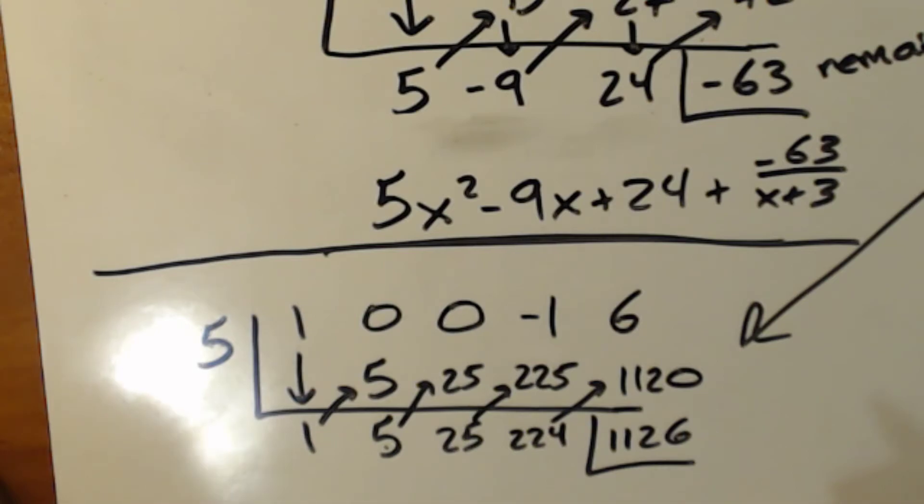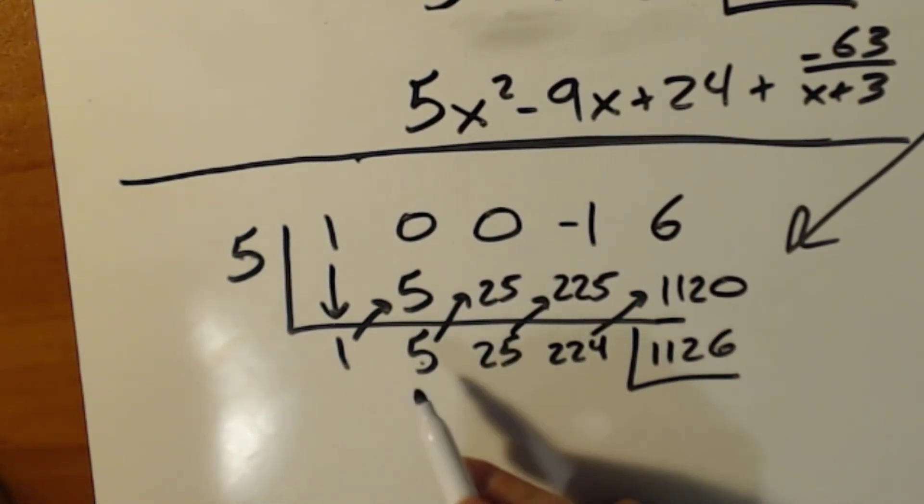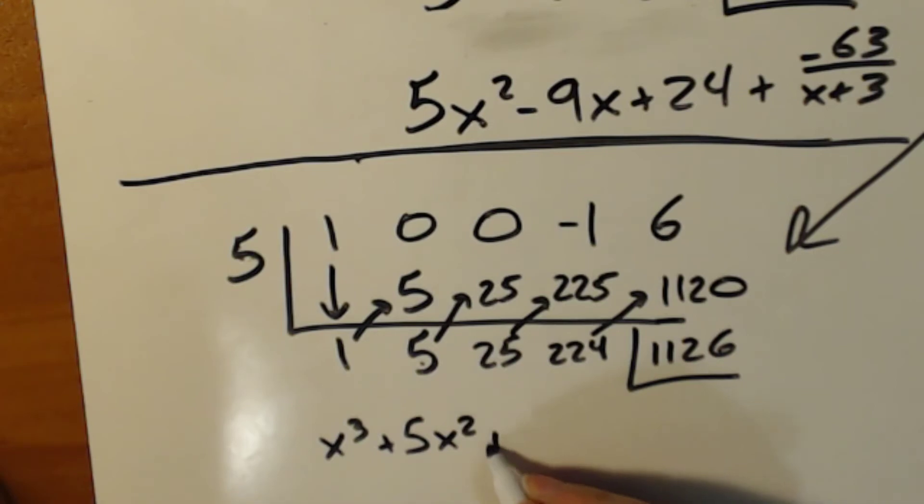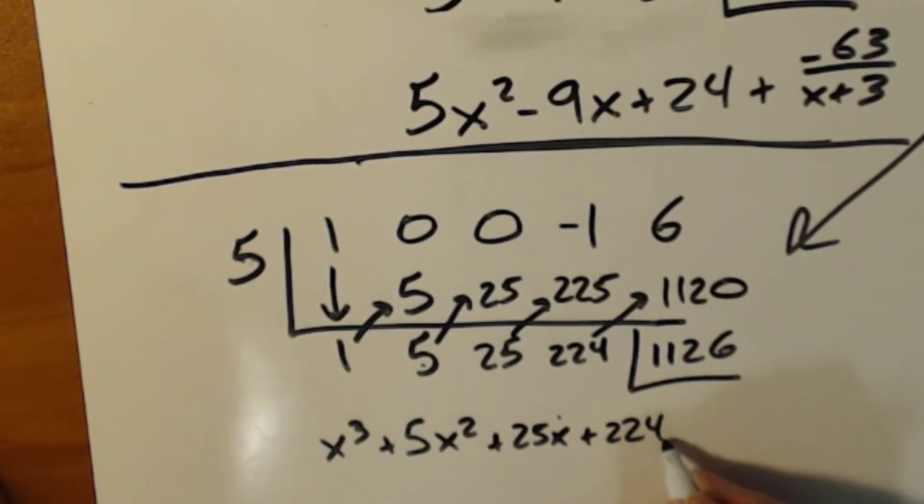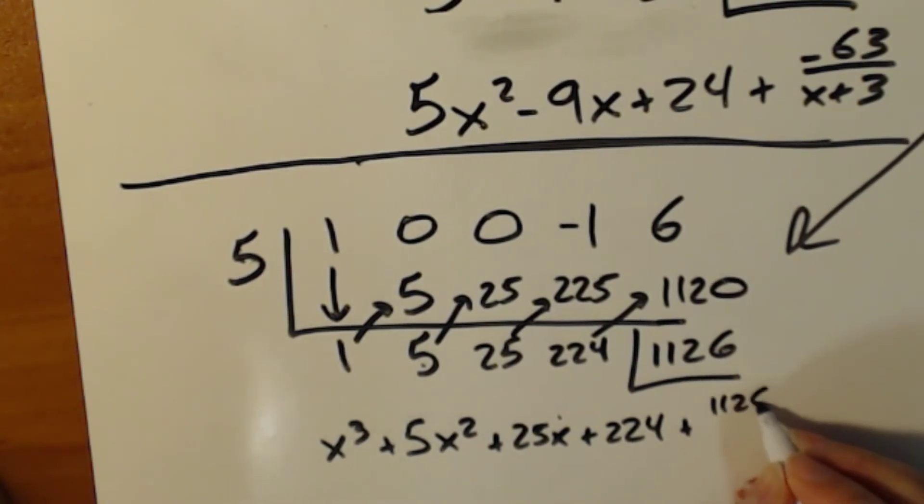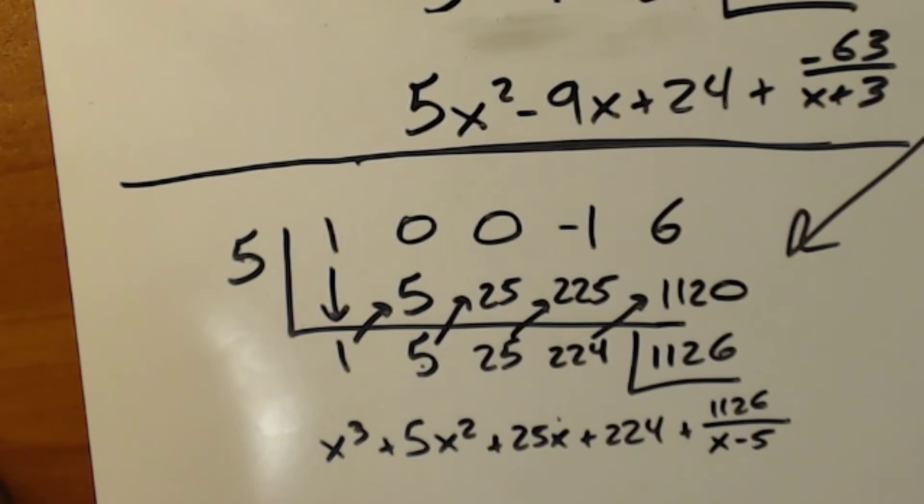224 times 5 is 1,120 plus 6. 1,126. So that's my remainder. So my answer, this is my constant x, x squared, x cubed. It's going to be x cubed plus 5x squared plus 25x plus 224 plus 1,126 divided by x minus 5. So got a lot of control, but the process was still easy.